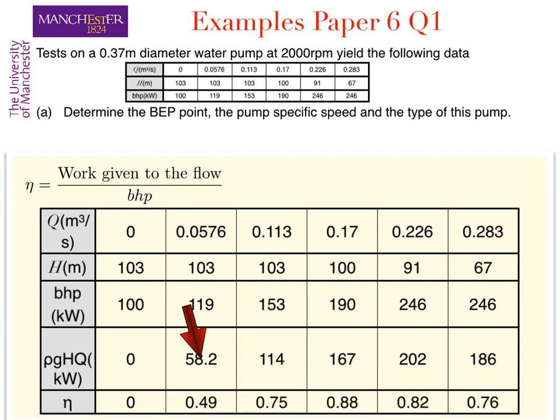Then if we divide this by the brake horsepower, for example for a flow rate of 0.0576 cubic meters per second we divide ρHQ of 58.2 by the brake horsepower of 119 kilowatts to obtain an efficiency of 0.49.